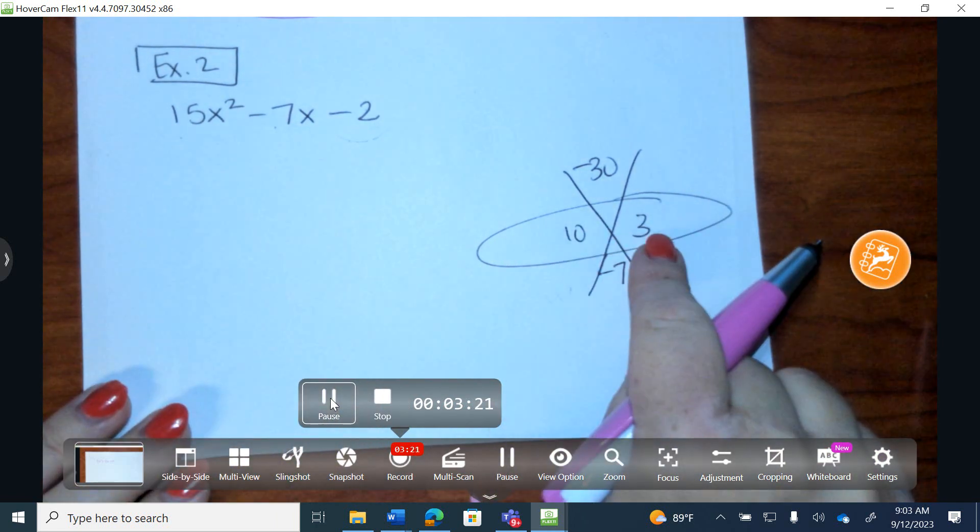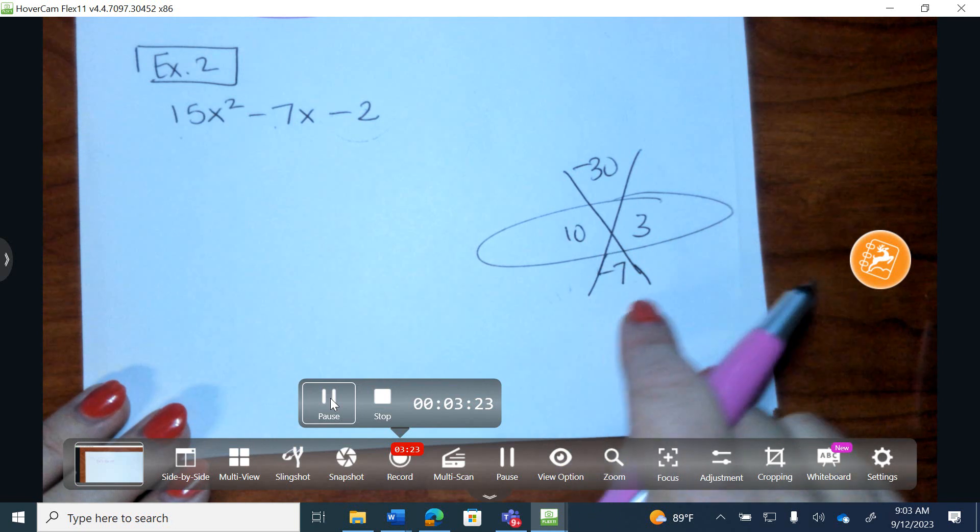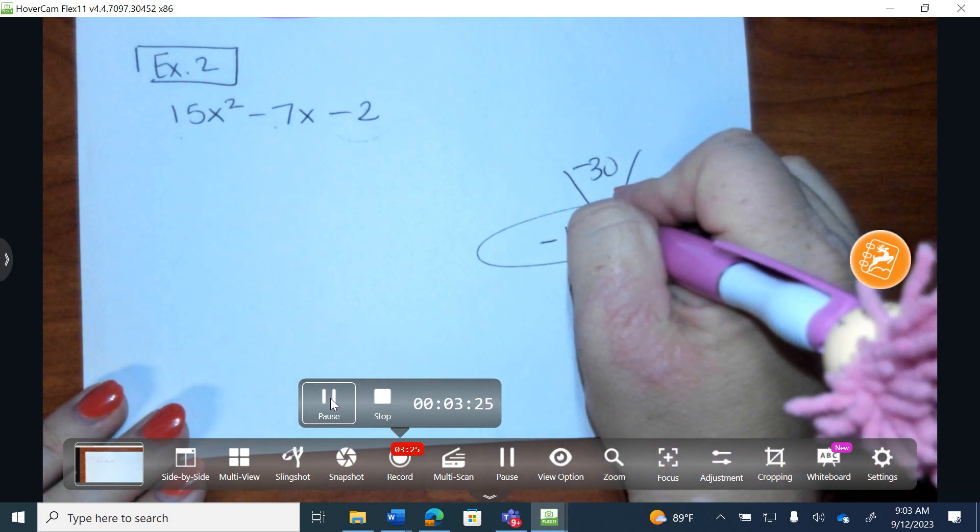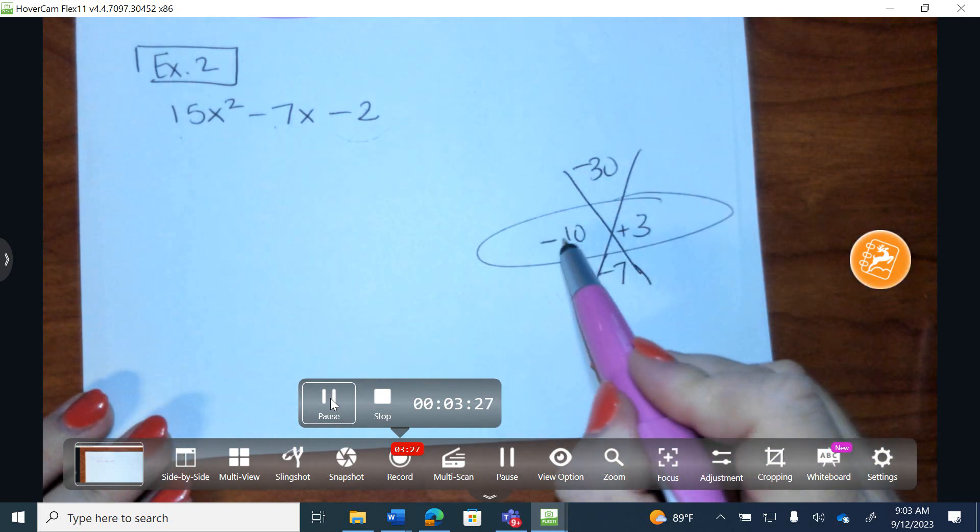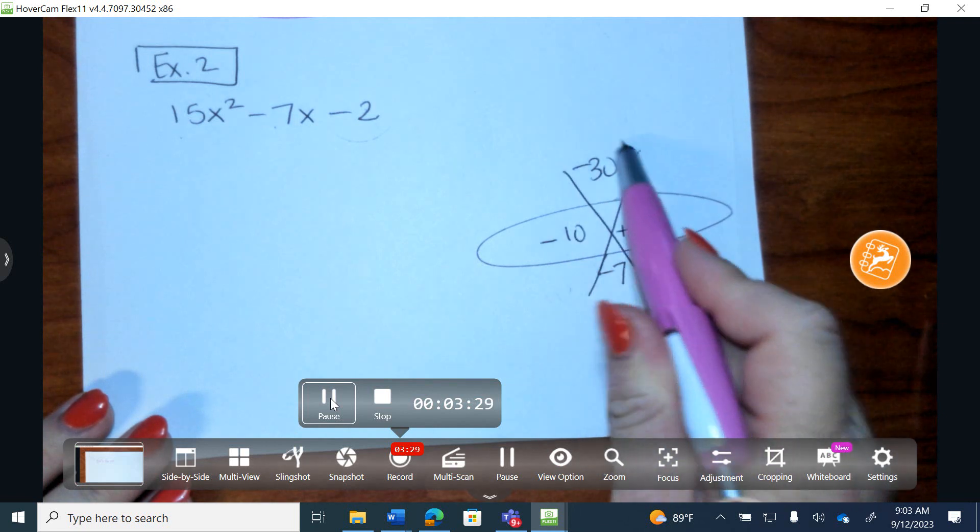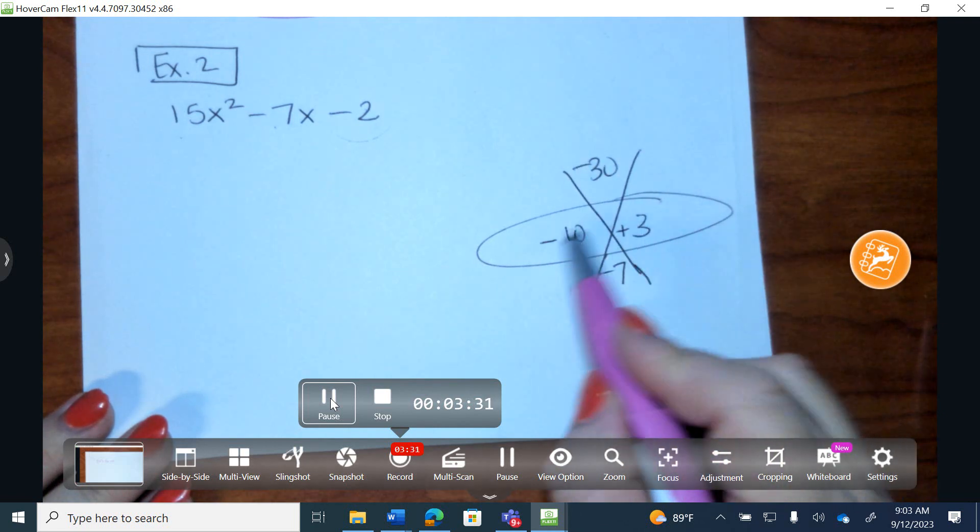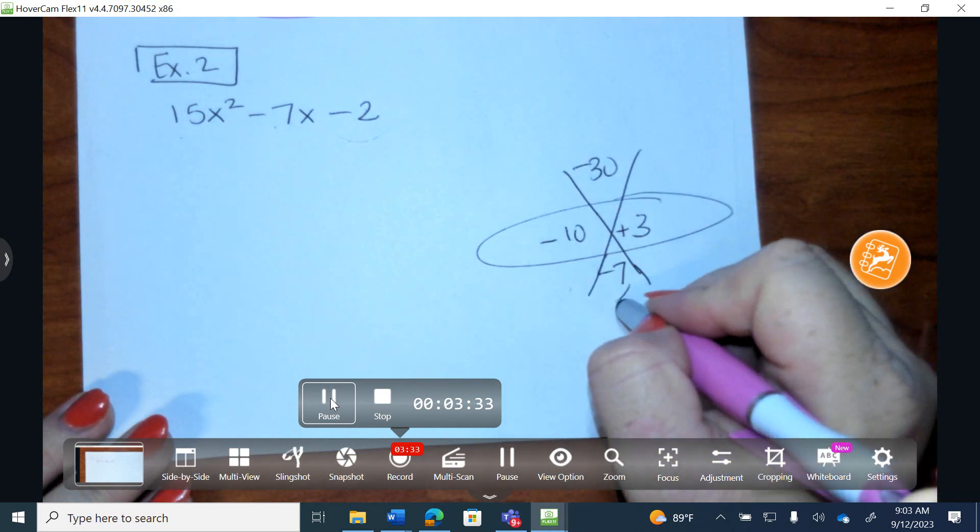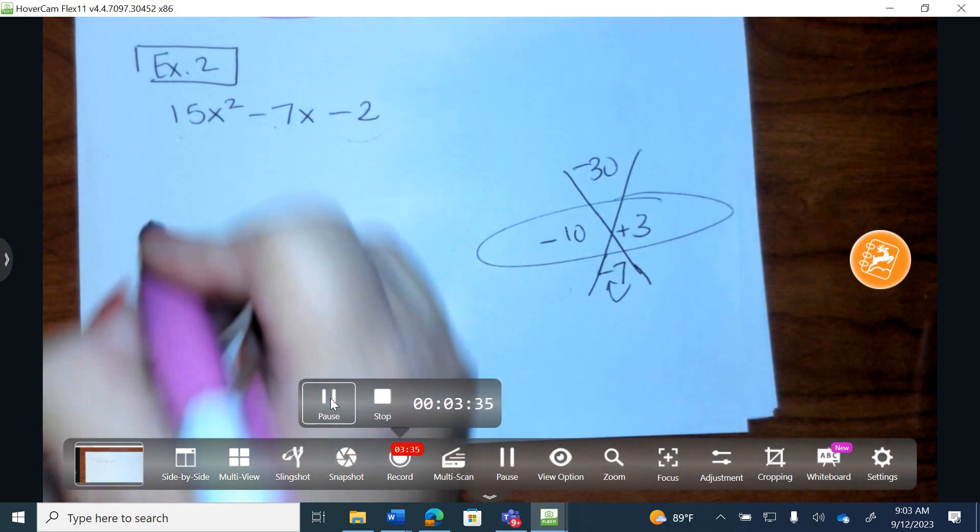What needs to be the symbols to end up by combining to get a negative 7? Negative 10 and positive 3. So they need to be different signs to multiply to achieve negative 30. And when you combine, the larger of the two numbers will be negative.